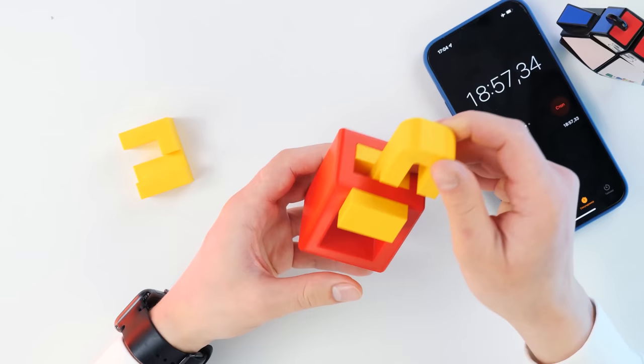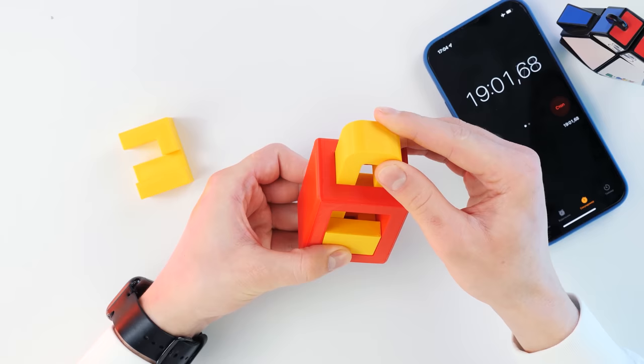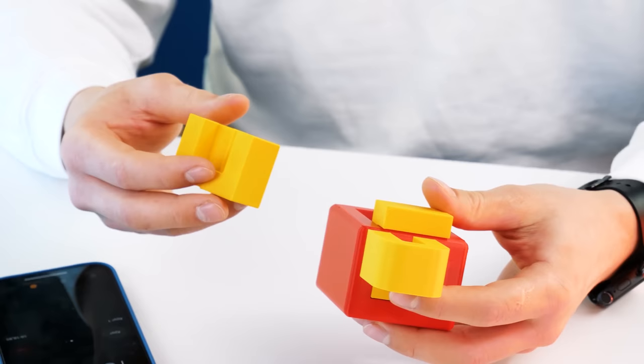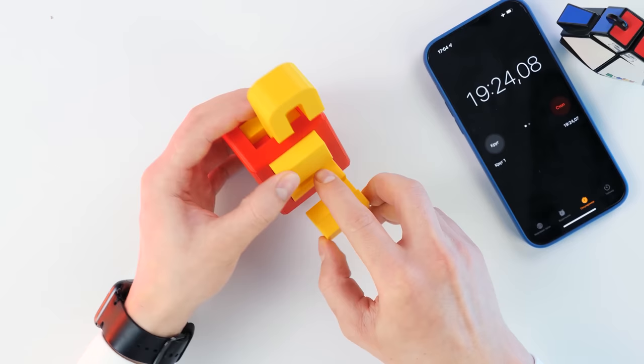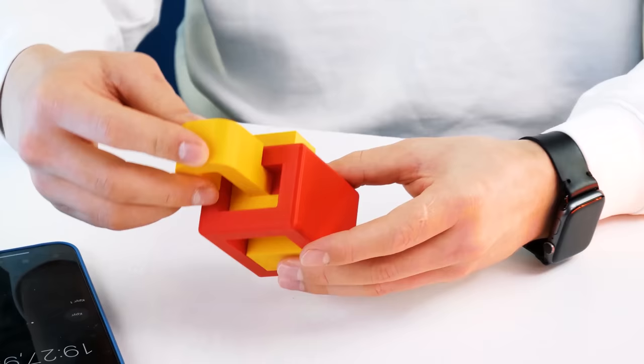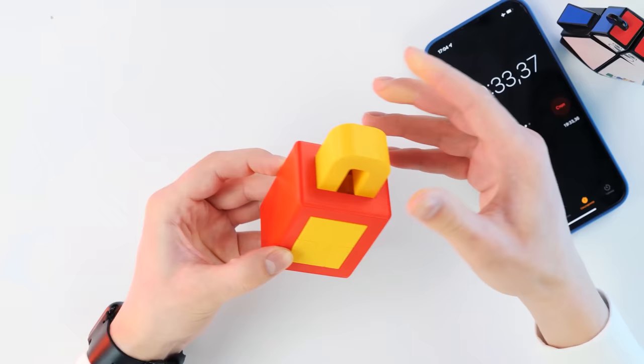Just look how simple it turned out. Literally 5 moves. Now we have the only option. And it's here. We put it down. We move all the pieces together. We shift them back and fix them. The puzzle was solved in 19 minutes 36 seconds.